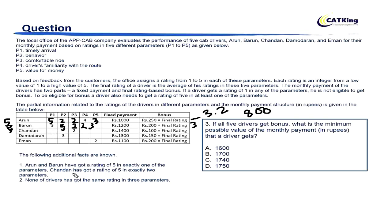For Chandan, it is given he gets 5 in exactly 2 parameters. Let's say 5 in P1 and P2. He already has 4 in another parameter. To minimize the remaining: 2, 2, and 3. Total = 5+5+4+2+3 = 19. Wait — sum is 5+5+2+2+3 = 17. Final rating = 17/5 = 3.4. Bonus = 3.4 × 100 = 340. Fixed = 1400. Total = 1740 for Chandan. Till now, Chandan has the least monthly payment.